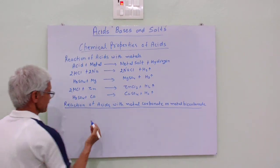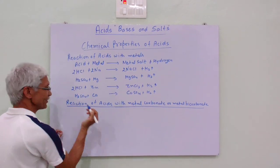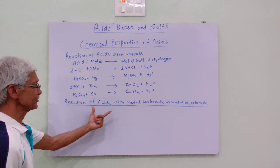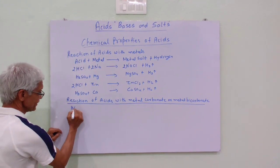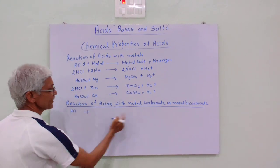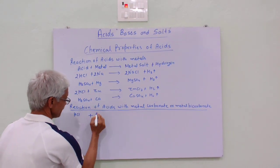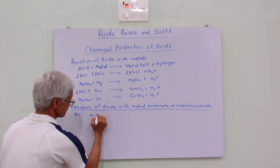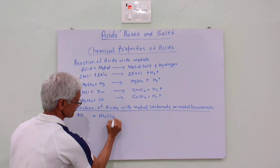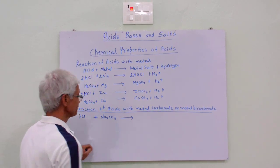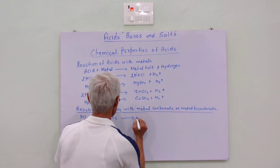In this reaction, we take any acid like HCl and we take any metal carbonate like Na₂CO₃. It forms metal salt, water, and carbon dioxide gas.